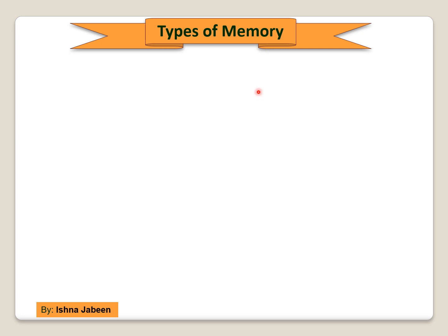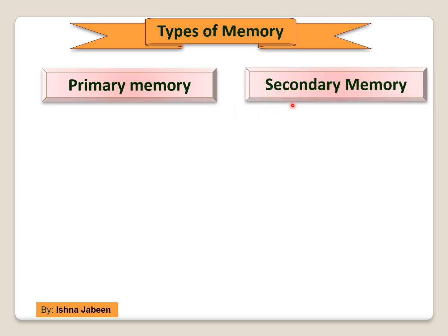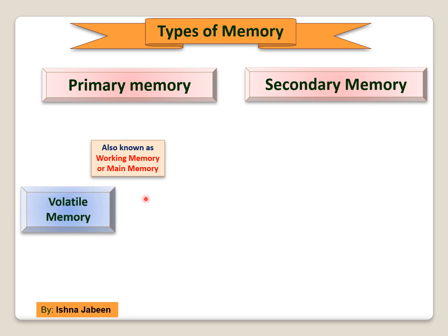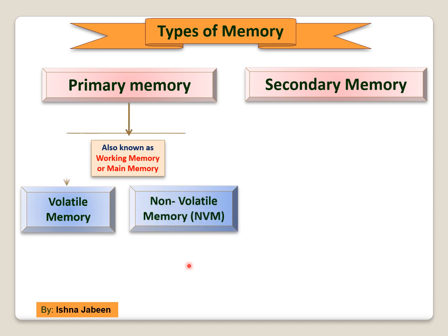Types of memory: computer memory is divided into two types — primary memory and secondary memory. Primary memory is also known as working memory or main memory. Primary memory is of two types: volatile memory and non-volatile memory. When the computer's power is turned off, volatile memory loses its contents, and non-volatile memory does not lose its contents when the computer is turned off.